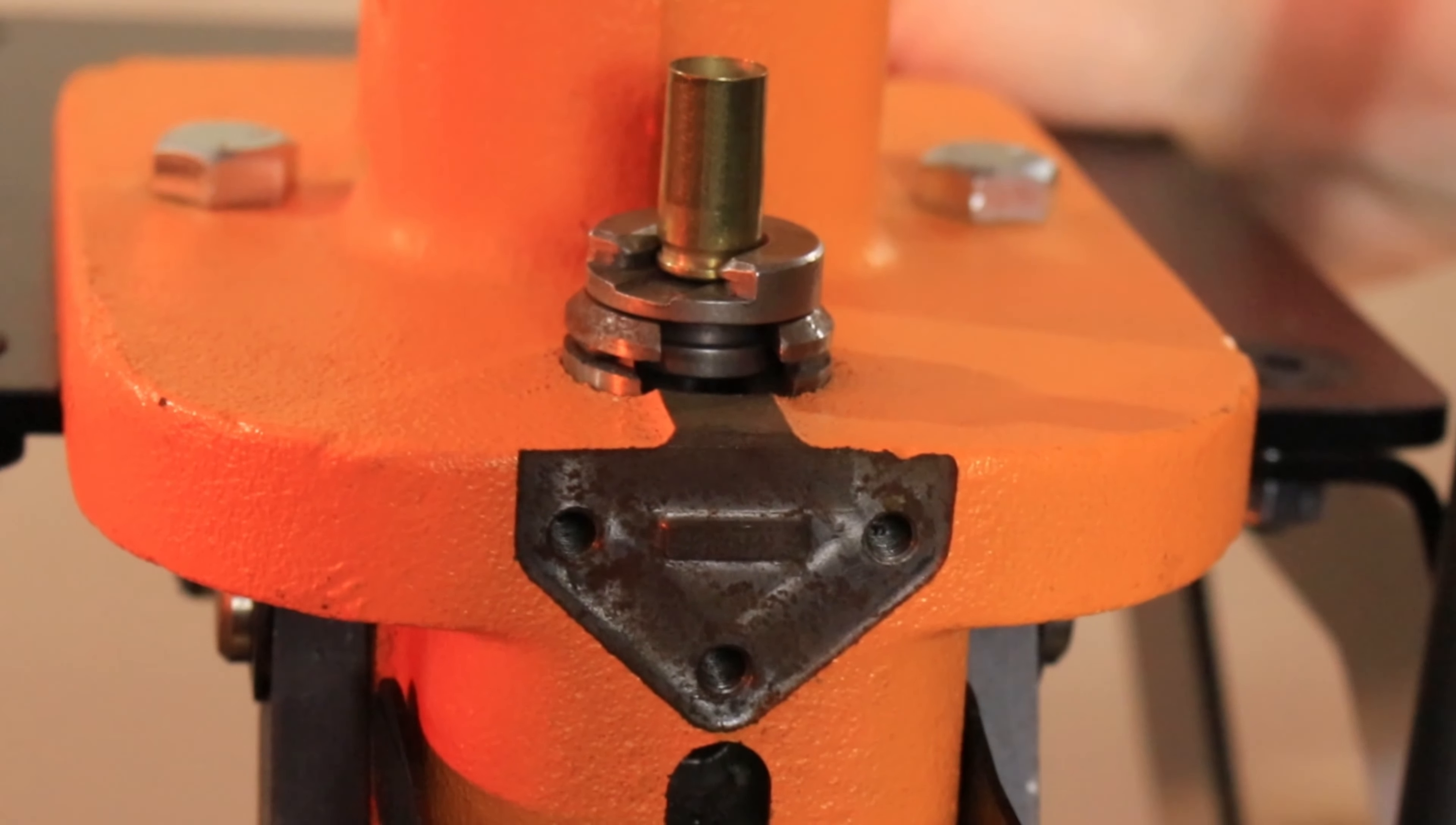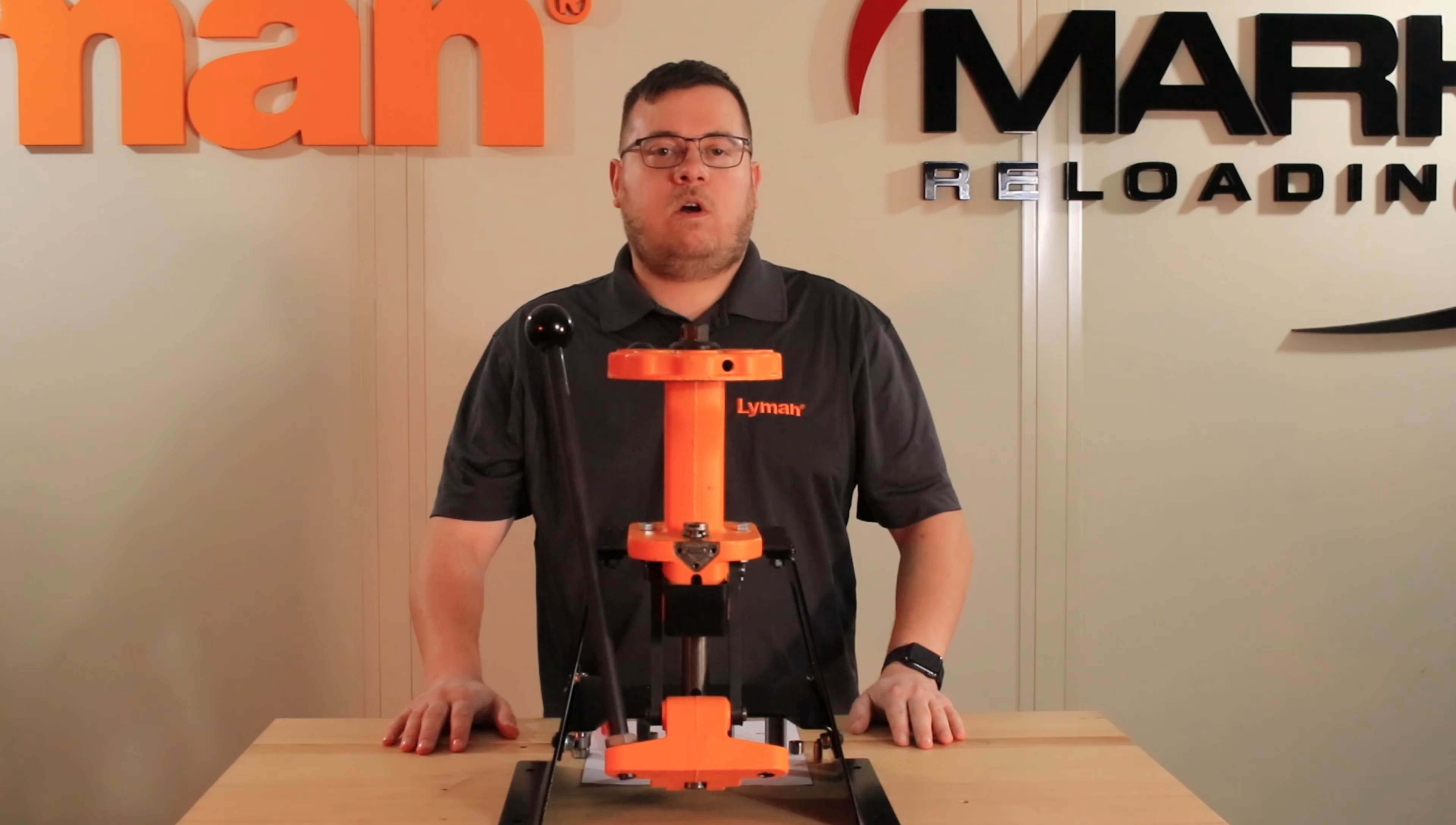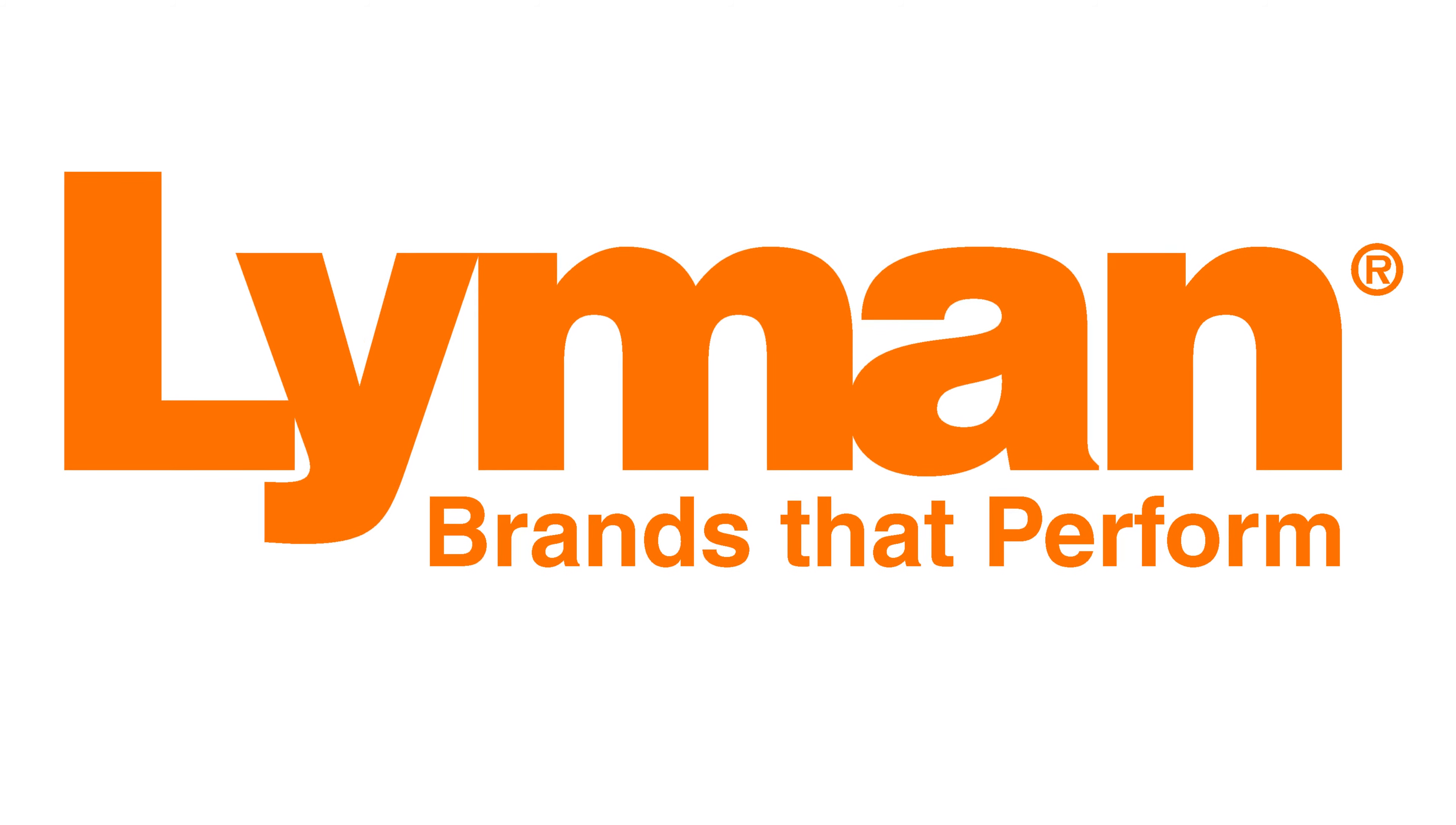Our sizing dies are available in most popular calibers from .223 Remington to .4570 Government. To see our full line of dies, go to our website at www.LymanProducts.com.